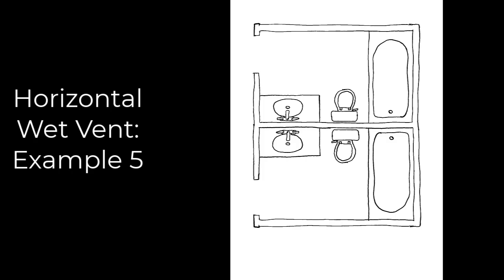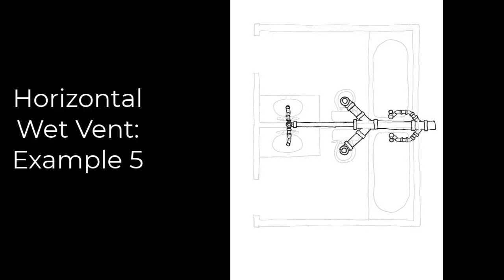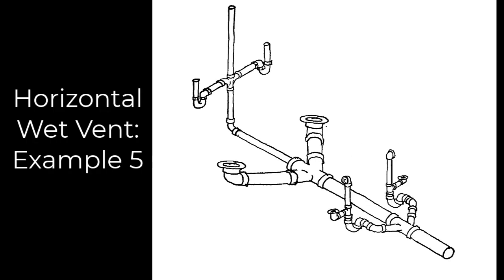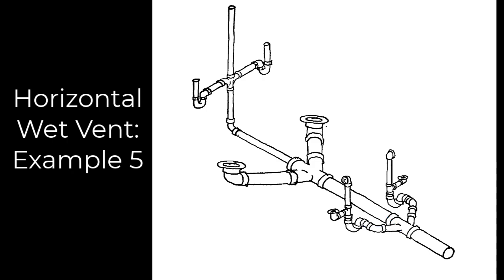Let's look at a different option for this same back-to-back bathroom group. This time let's employ some double fittings to save on fittings and pipe. The drain is headed to the right, and with the use of double Y's we're able to branch off along the way for each of the tubs and toilets. Following the wet vent through, the common wet-vented lavatories' drain serves as a vent all the way down to the double Y's connecting the tubs — this is as much as you can do with horizontal wet vent according to the International Plumbing Code.